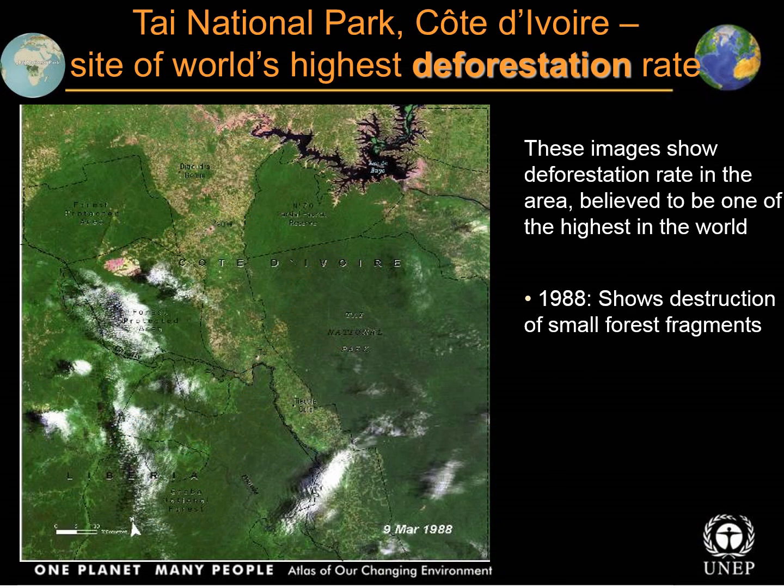Here we have some satellite imagery from Tai National Park in Cote d'Ivoire — also known as the Ivory Coast — which has some of the world's worst deforestation.